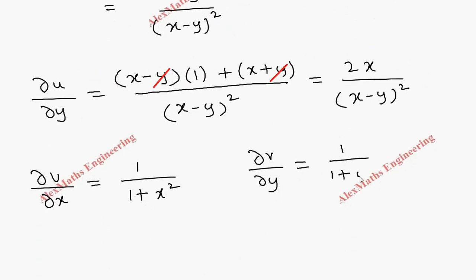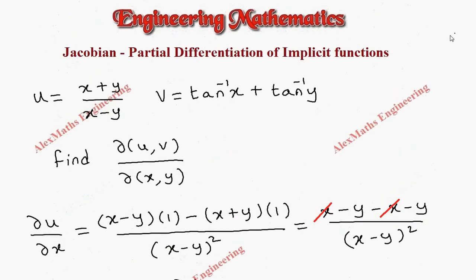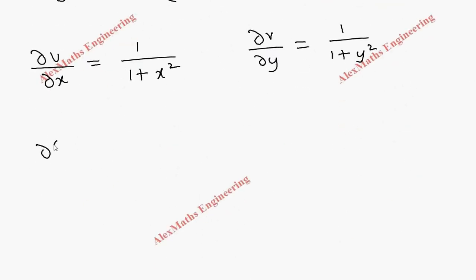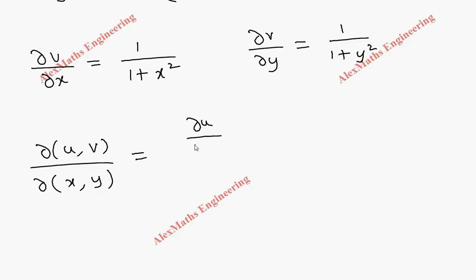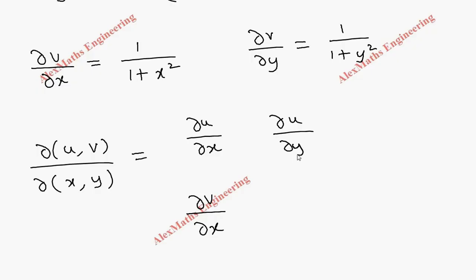Now we are going to evaluate ∂(u,v)/∂(x,y). The formula for the Jacobian determinant is: ∂u/∂x, ∂u/∂y in the first row, and ∂v/∂x, ∂v/∂y in the second row.